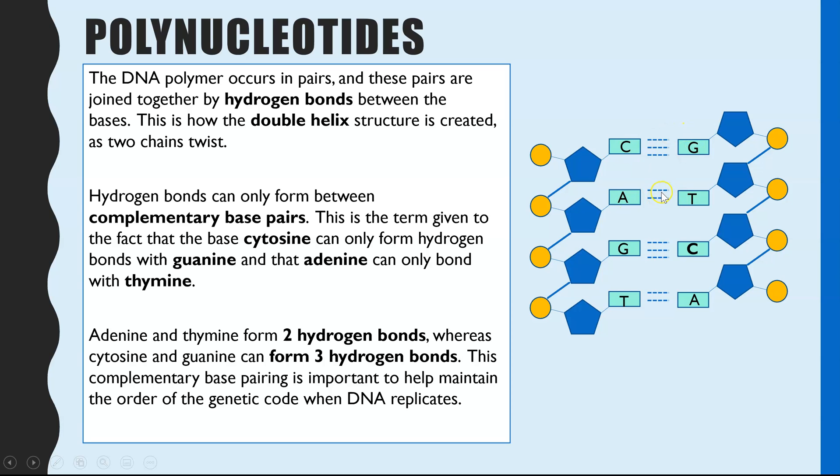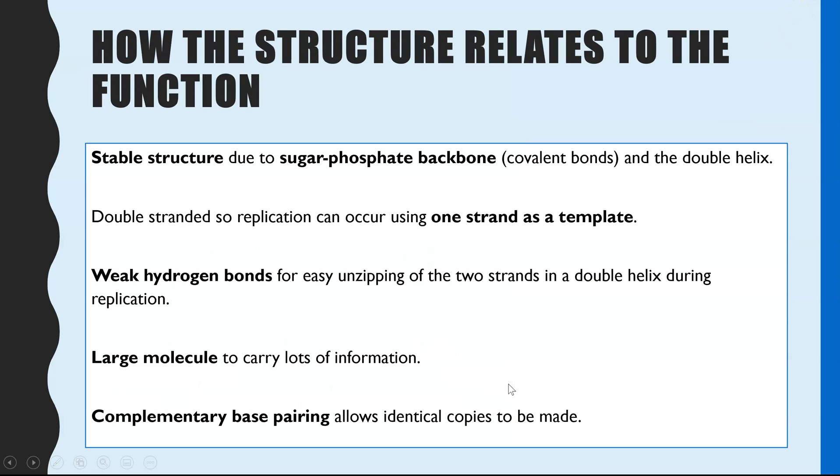And this idea of complementary base pairing is really important when it comes to DNA replication, because that is what ensures that identical copies of DNA are created. And I'll link my DNA replication video just up here. So the final thing is knowing then these structures that we've looked at in DNA, in particular the polymer, how does that relate to its function of being a genetic information carrier but also a very very stable, strong molecule?